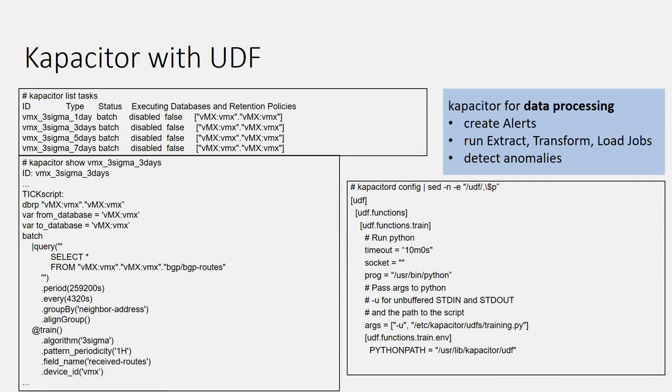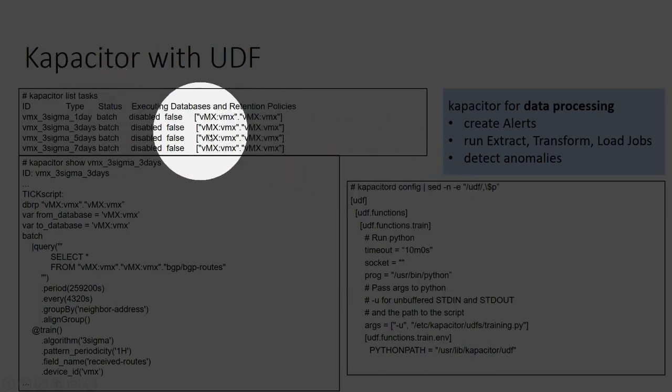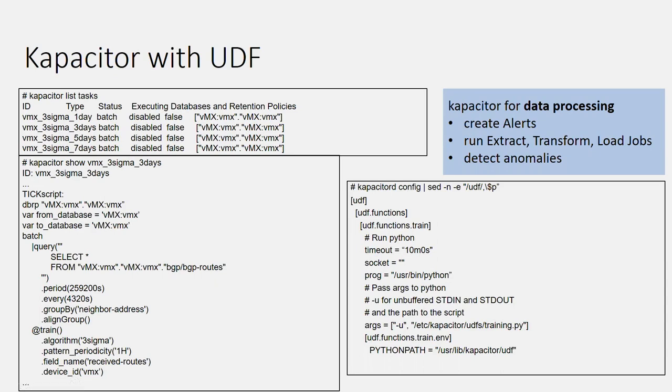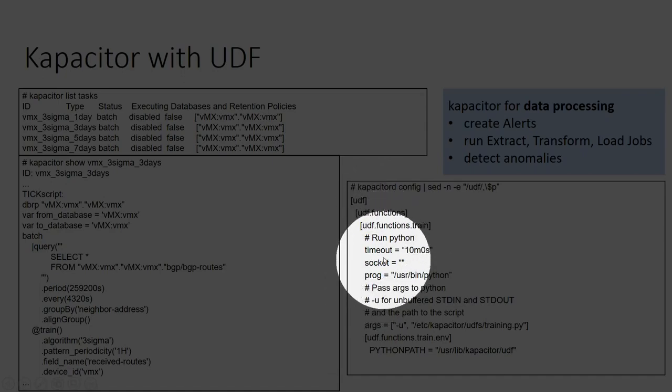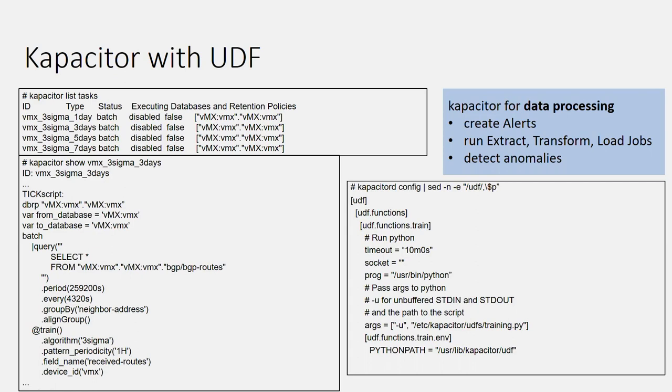In my example I use Kapacitor. Kapacitor is responsible for data processing, creating alerts, and running jobs. I exported received routes into the InfluxDB database at 10 millisecond intervals — many values over time. I run a batch process to analyze the data and calculate a model based on historical data using a Python script that builds pickle files. I use two algorithms: the three-sigma algorithm and a clustering algorithm — k-means.